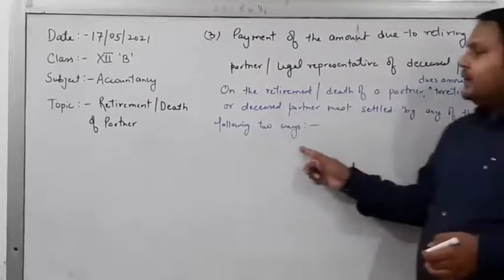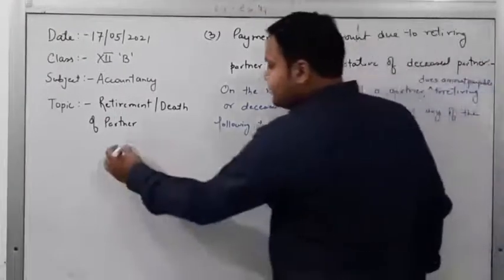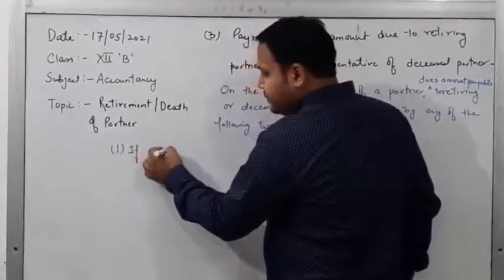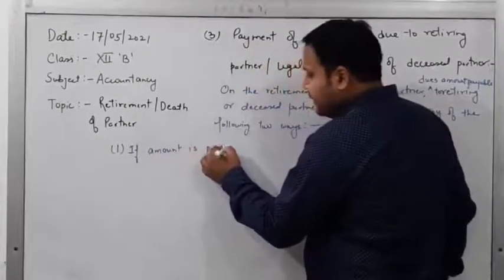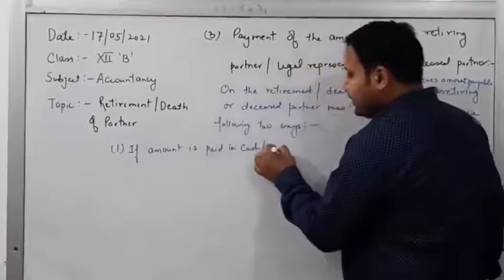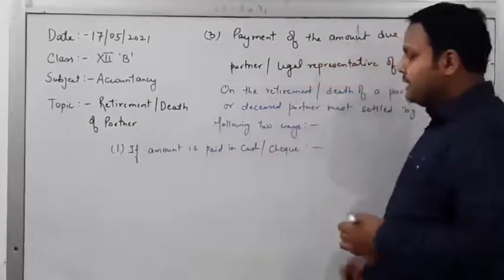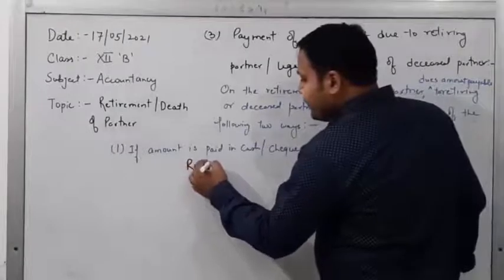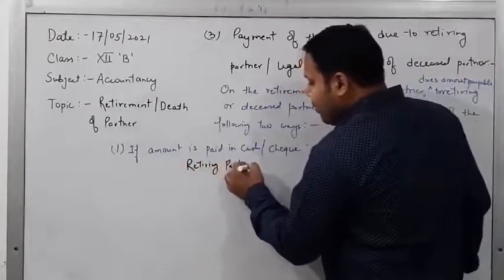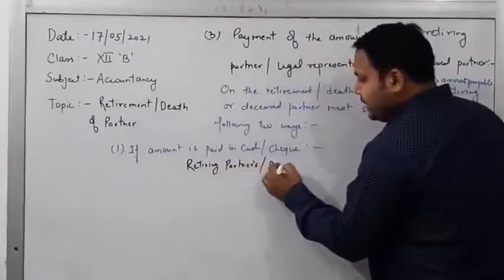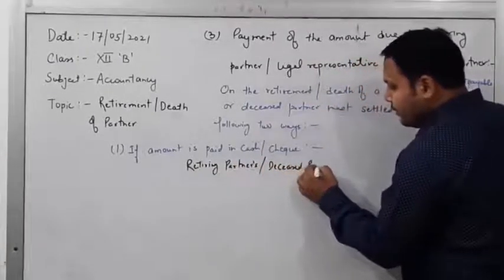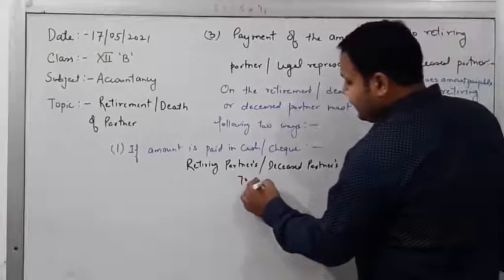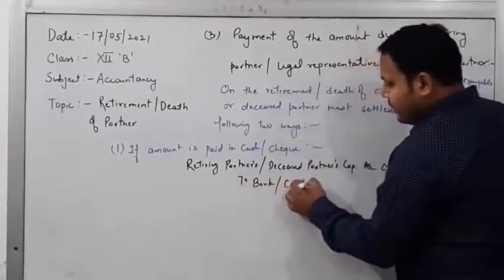The first way is when the amount is paid in cash or by cheque. In this situation, the journal entry will be: Retiring partner's or deceased partner's capital account debit to cash account.